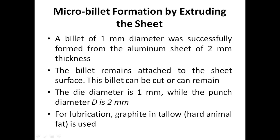The billet remains attached to the sheet surface and can be cut or can remain. The die diameter is 1 mm while the punch diameter is 2 mm. For lubrication, graphite in tallow — a hard animal fat — is used.